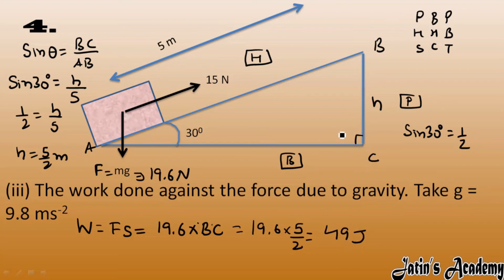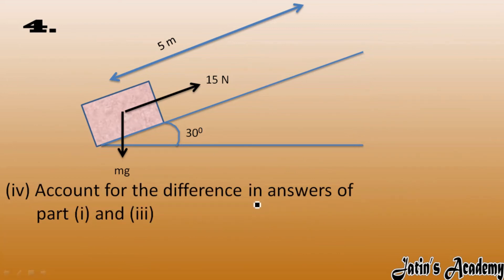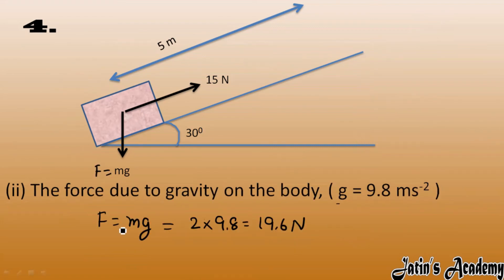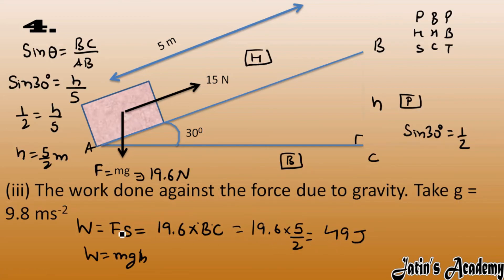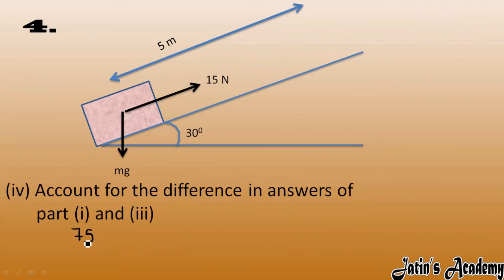The formula W = mgh uses the vertical height, not the base or the inclined distance. Next, we account for the difference between part 1 and part 3. Part 1 answer is 75 Joules and part 3 answer is 49 Joules. The difference is 75 − 49 = 26 Joules.